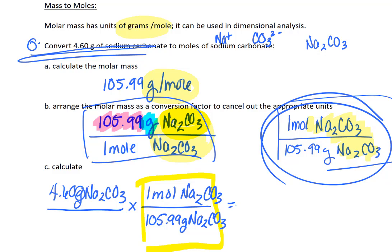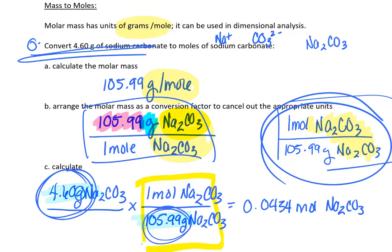And then we'll put the moles on top. So we're using this conversion factor. So when we put this in our calculator, what you're going to do is you're going to put in 4.60 divided by 105.99 and then hit the equal sign. And then you're done, right? You should get something like 0.0434 moles of sodium carbonate. So keep in mind that here I have three significant figures. Here I have five significant figures. So three will limit us.